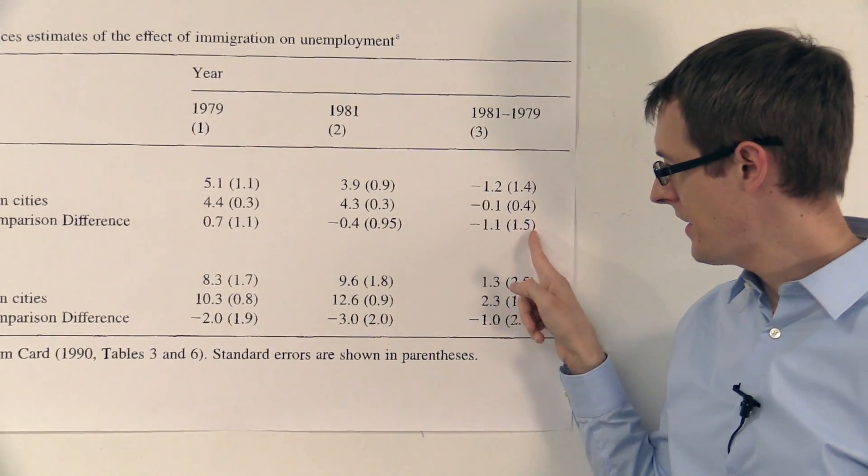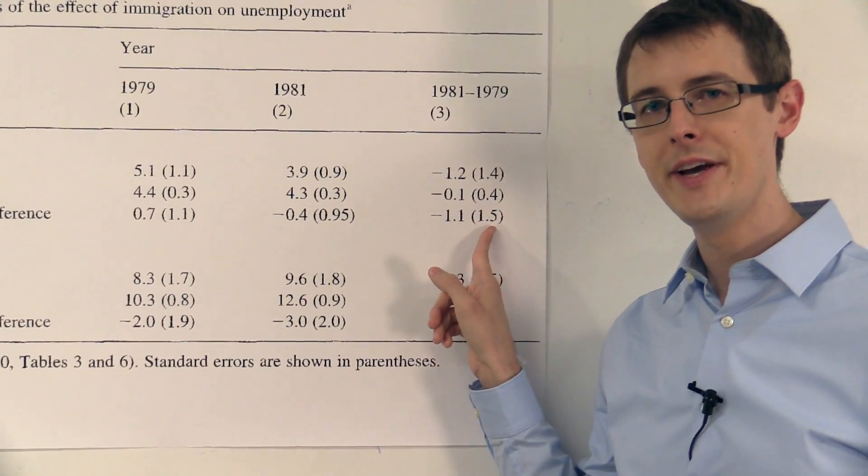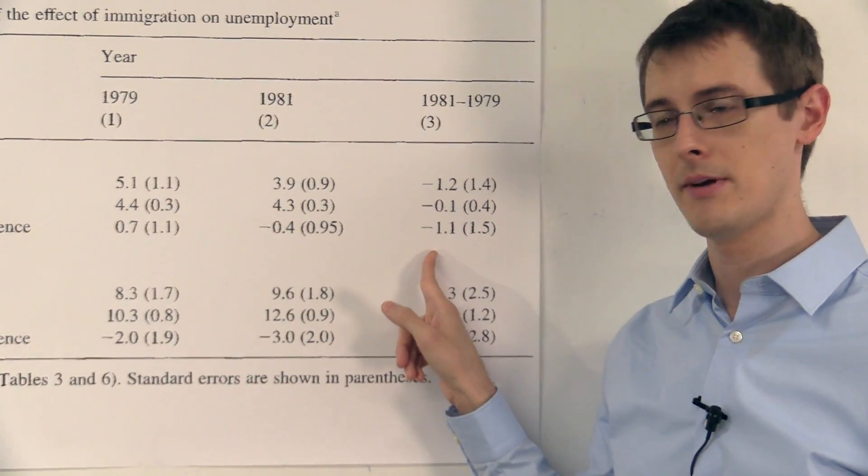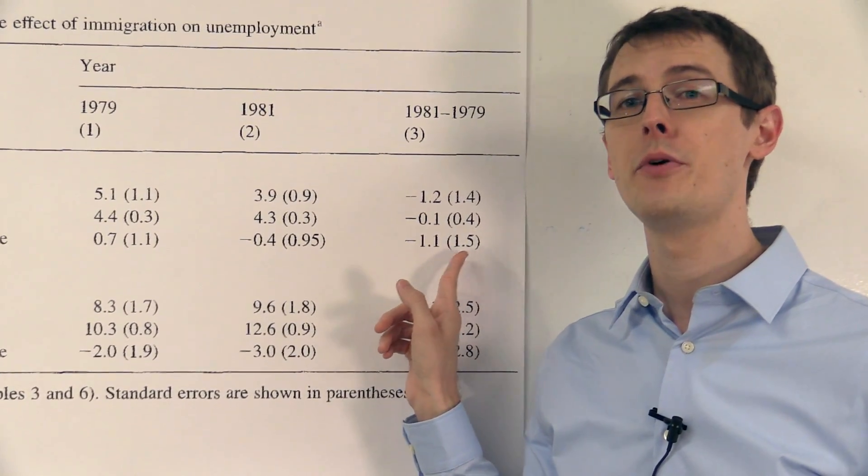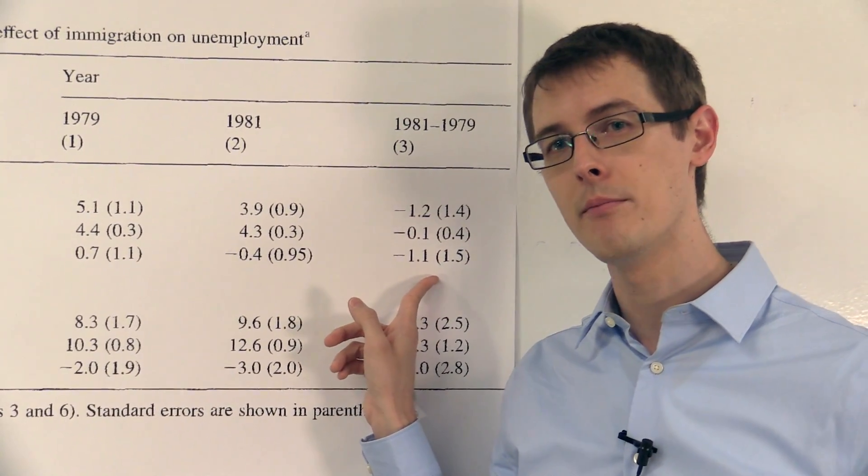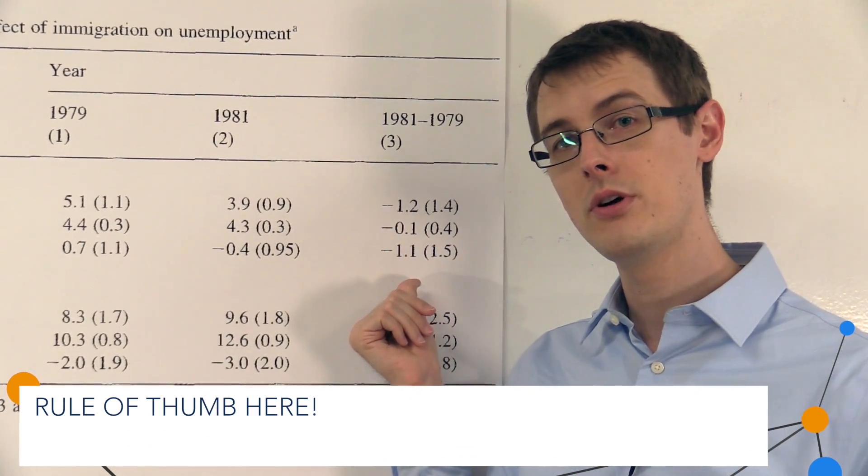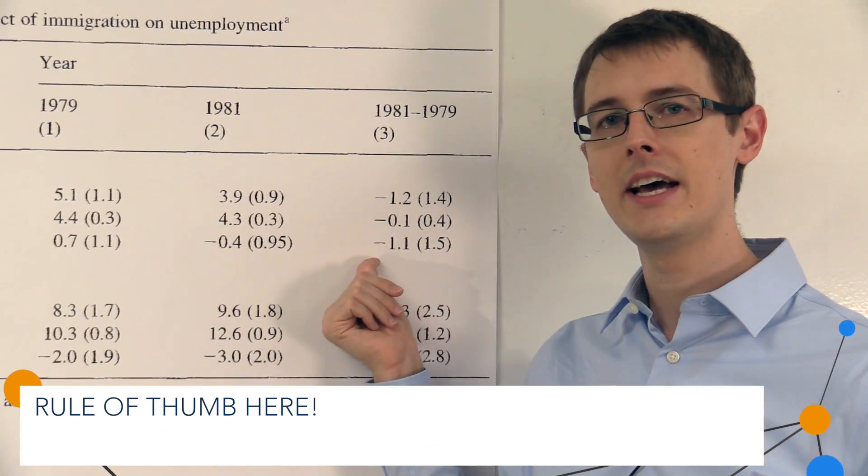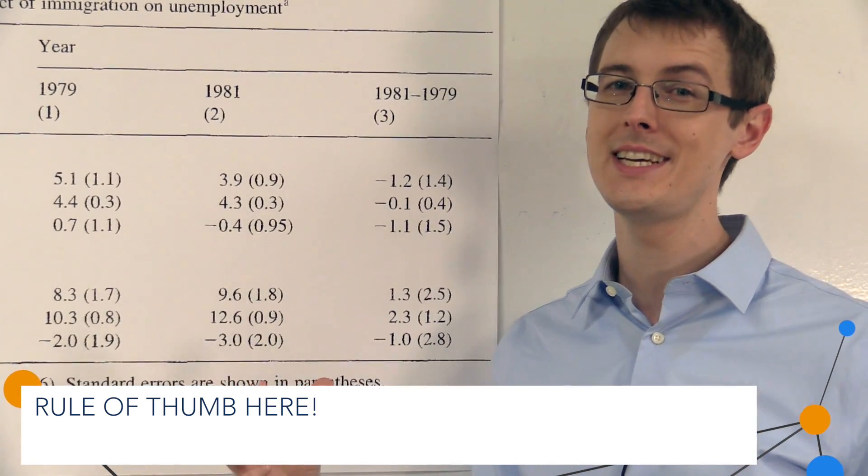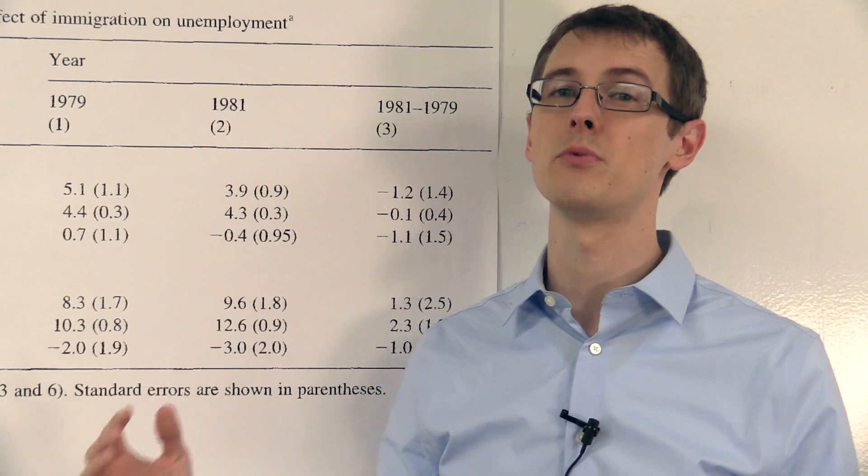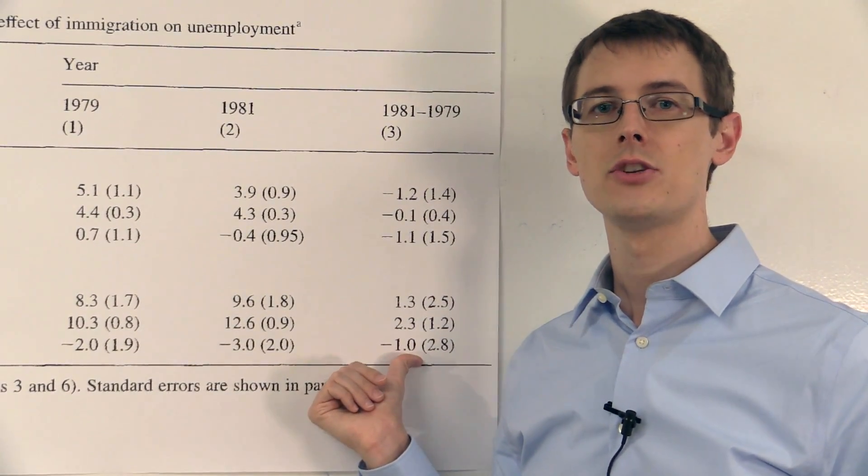And we can see that by looking at these numbers here in parentheses. So here, this is the standard deviation for the difference in difference estimate, and it's 1.5, it's very large. So if we use this in our rule of thumb to construct a confidence interval, we take the standard deviation, multiply it by 2, and add and subtract that to our estimate. That gives us our confidence interval. We do that, we're going to see that zero's in the interval, and the interval's really big. The same thing's true for our estimate for blacks.